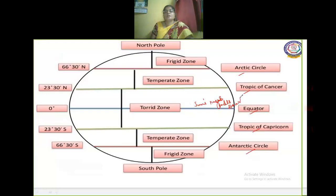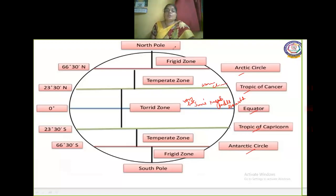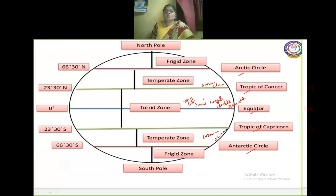The place near to the equator is very hot because the sun's rays fall directly and the heat is extreme. The Tropic of Cancer region is called the temperate zone with a warm climate. The Arctic Circle is called the frigid zone, which does not receive much sun and is a cold frozen region. Similarly, the South Pole region is also a frigid zone, and the temperate zone near the Tropic of Capricorn has a warm climate.